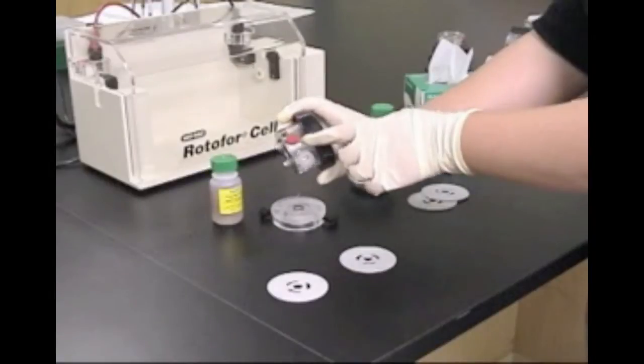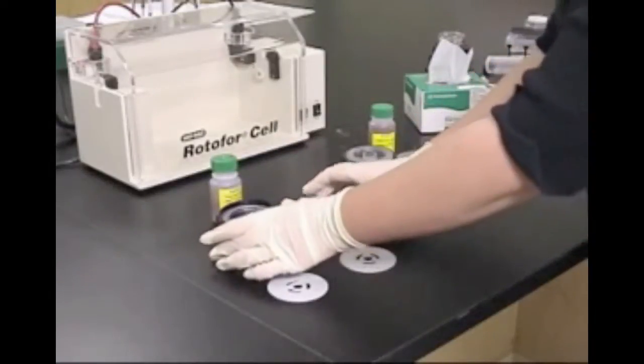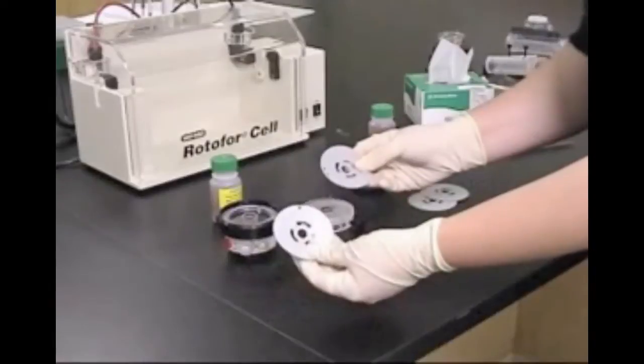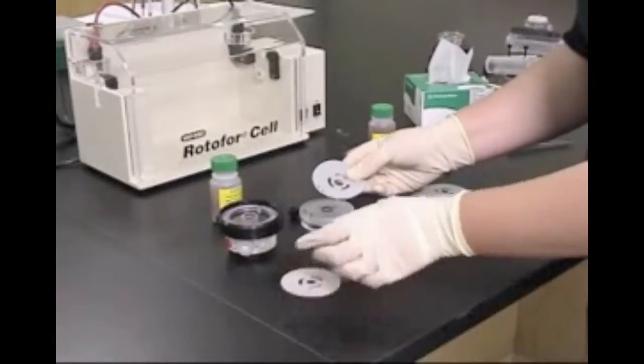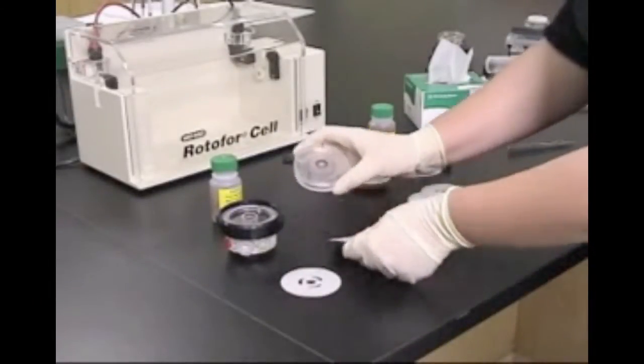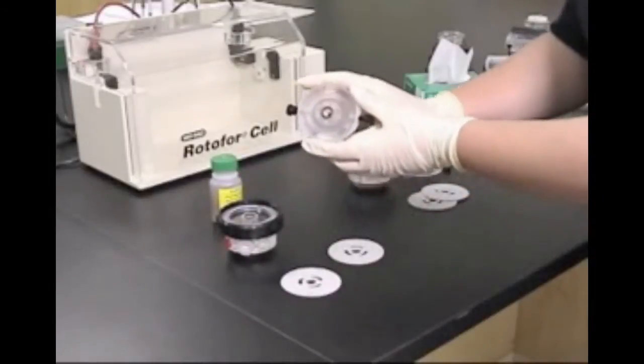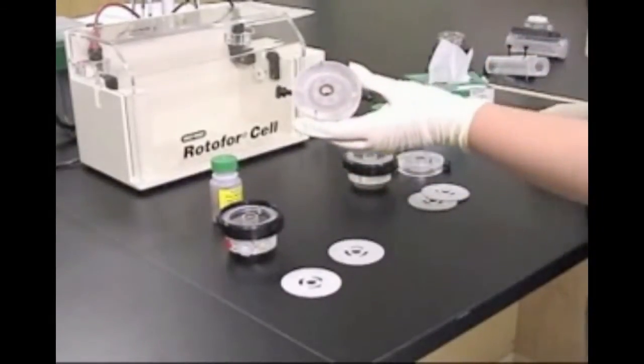We will first assemble the anode chamber, which is designated by the red button. Note that the two electrode chambers and ion exchange membranes are not interchangeable, but the four gray rubber gaskets can be used in either assembly.